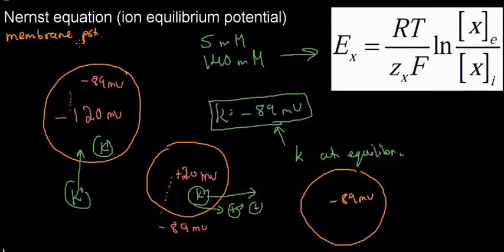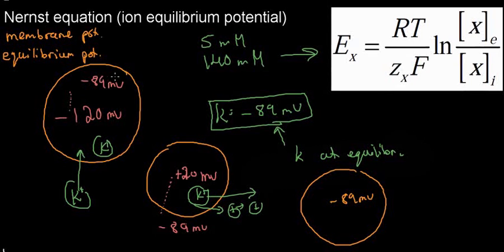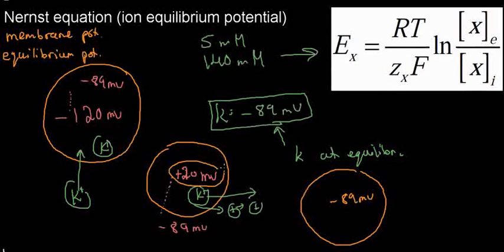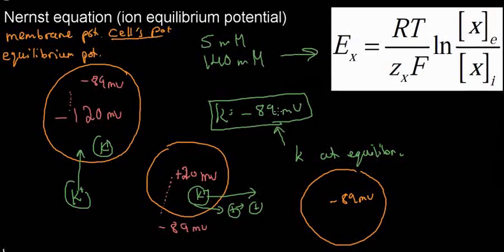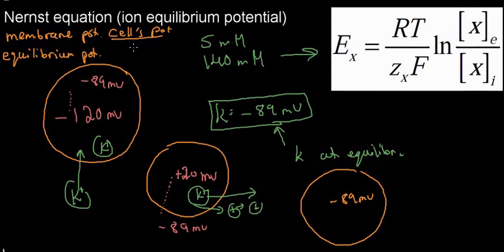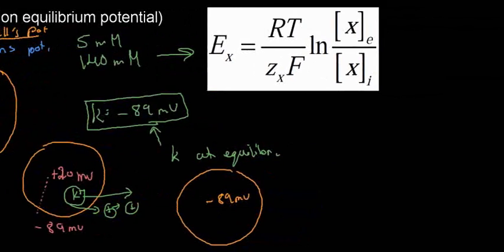We need to understand two different concepts that are often confused. The membrane potential is asking: what is my membrane at right now? It was at negative 120, or it shifted to negative 89, or it was at plus 20 — it's asking what is my cell's potential right now. The equilibrium potential is the potential or voltage difference at which there is equilibrium for a given ion — for example potassium — and it is that ion's equilibrium potential specifically.